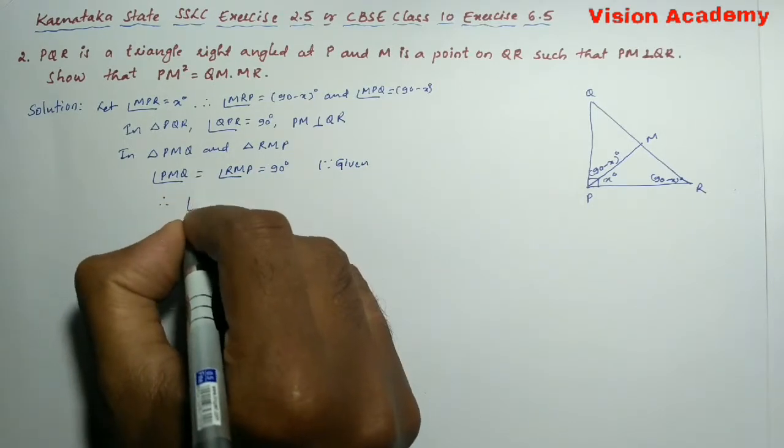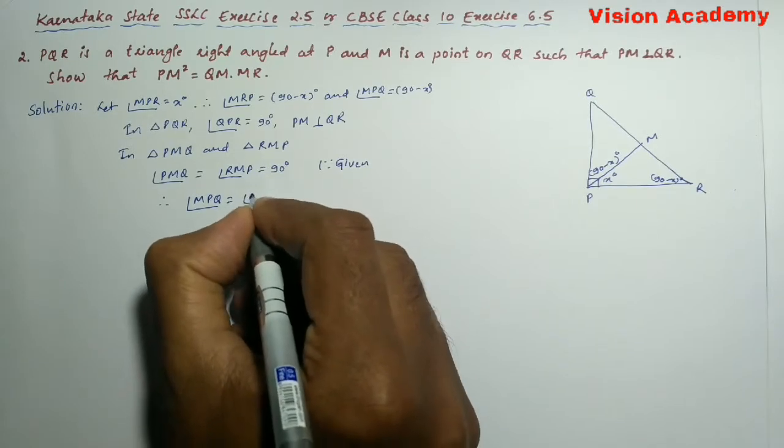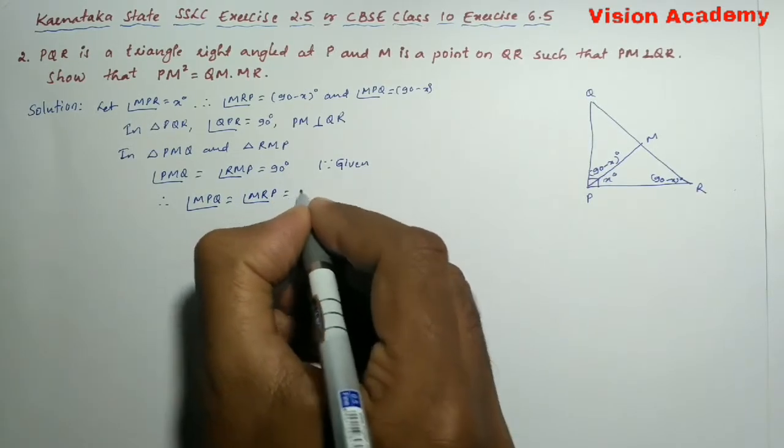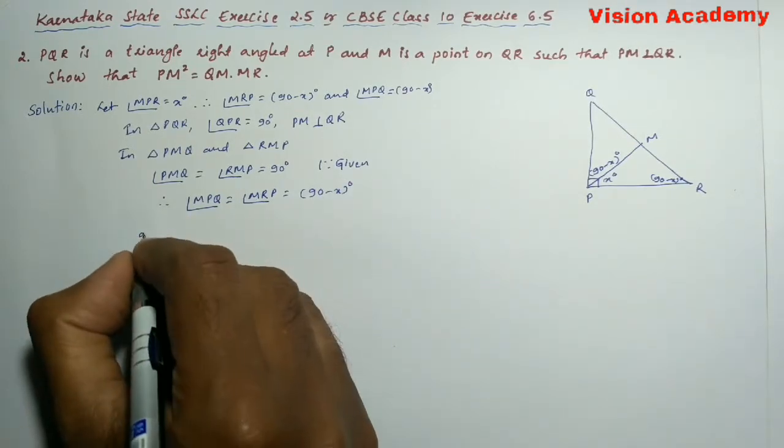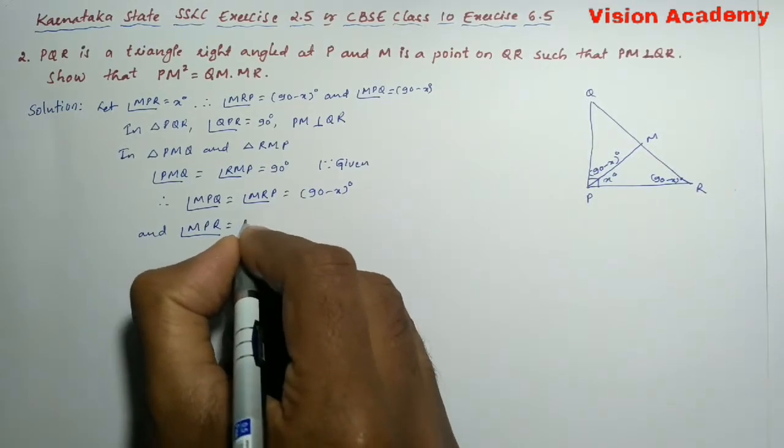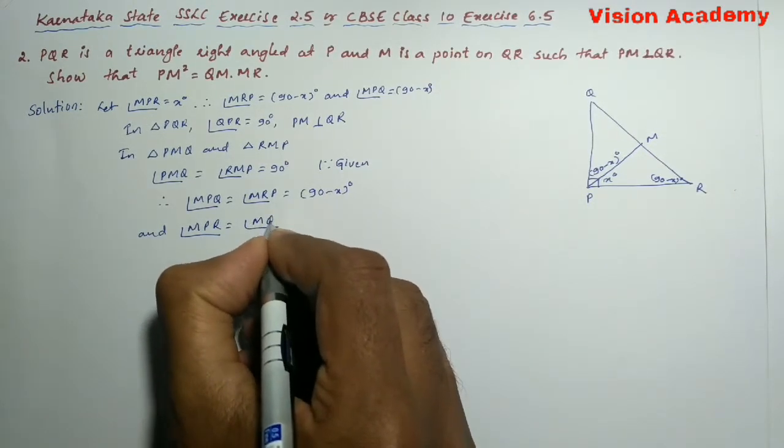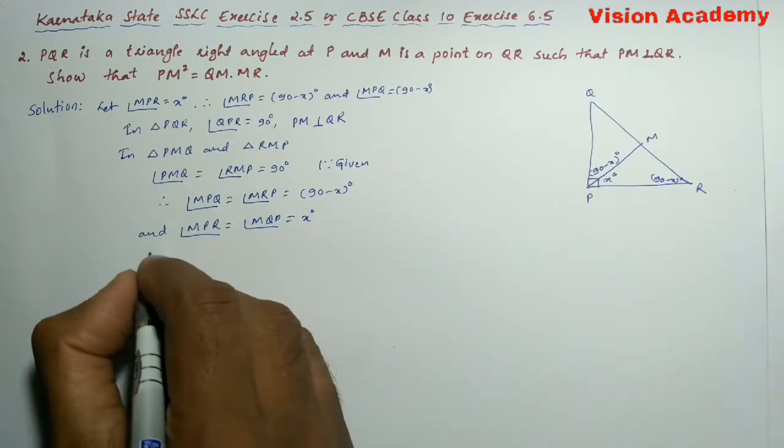Therefore angle PQM is equal to 90 minus X degrees, and angle MPR is equal to angle MQP which is equal to X degrees.